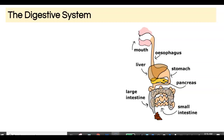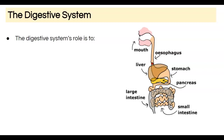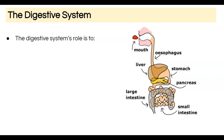In today's lesson we're going to be talking about the digestive system. Take a minute to look at this diagram — what is the role of the digestive system? We're going to be looking at the human digestive system this year. Next year, if you're taking grade 11 biology, you'll be learning about the digestive systems of a variety of organisms.